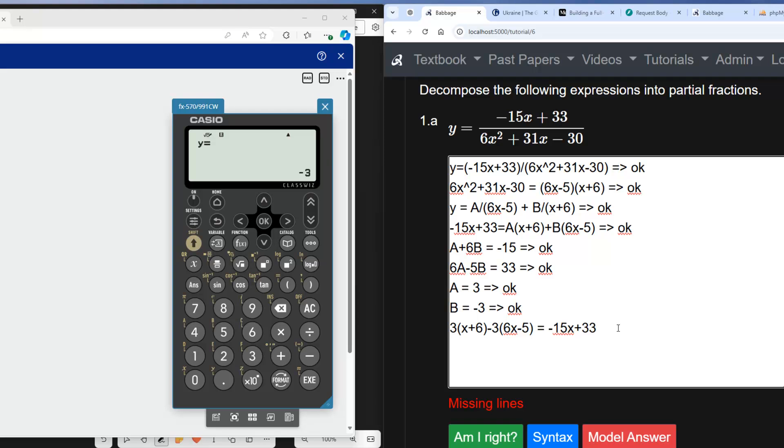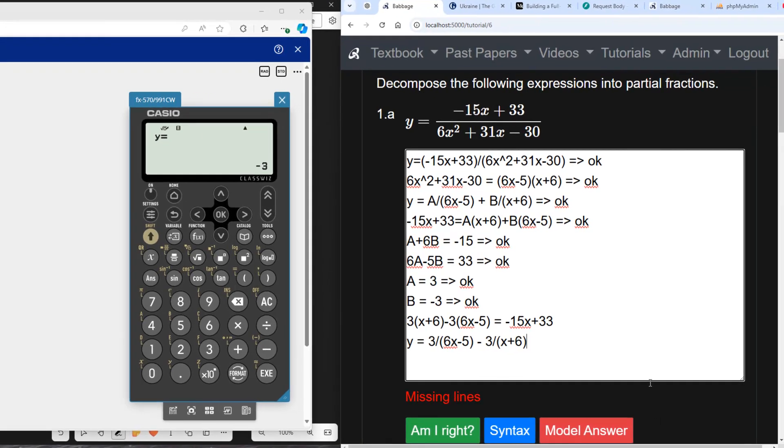So finally now we can write the solution to this, which is y is equal to A, which is 3, divided by... let's copy it from here. In fact, let's take all of that, put that in there. And then B is -3, isn't it? So it's going to be -3 over (x + 6). And that's our final answer. Am I right?